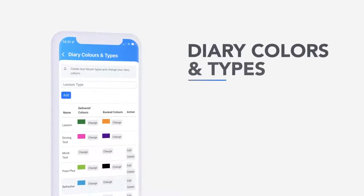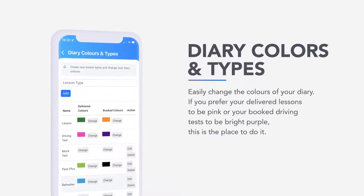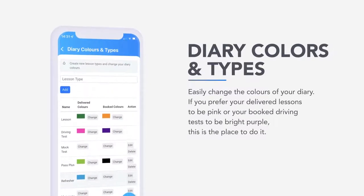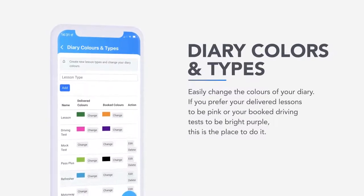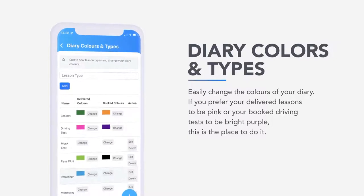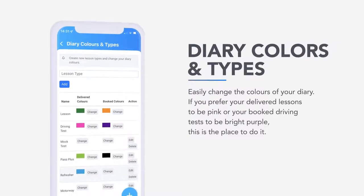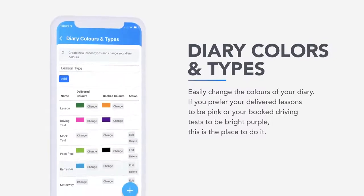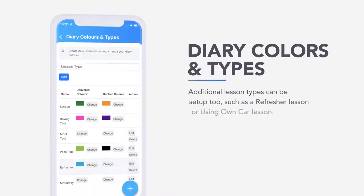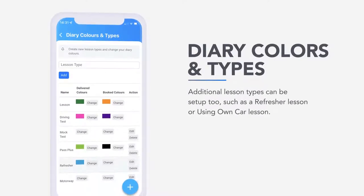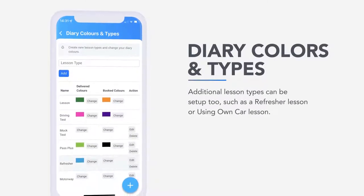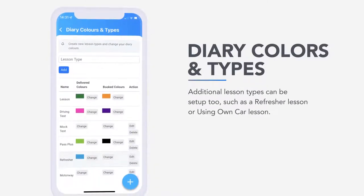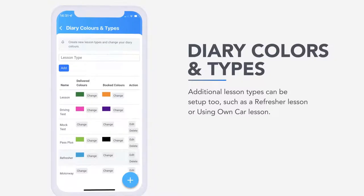Diary colours and types. Easily change the colours of your diary. If you prefer your delivered lessons to be pink or your booked driving tests to be bright purple, this is the place to do it. Additional lesson types can be set up too, such as a refresher lesson or using own car lesson.